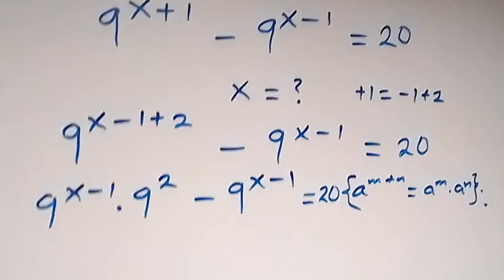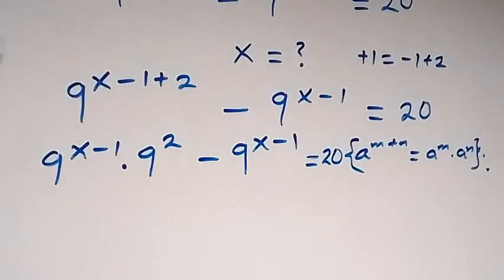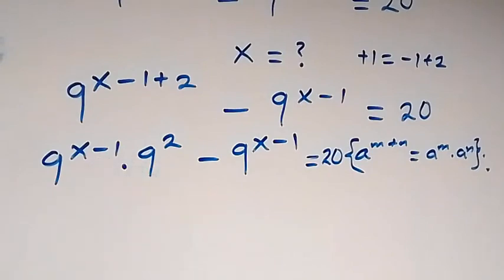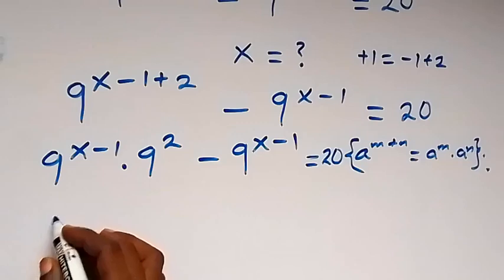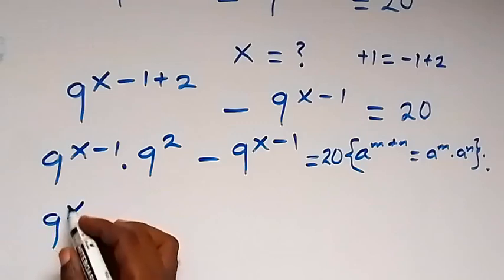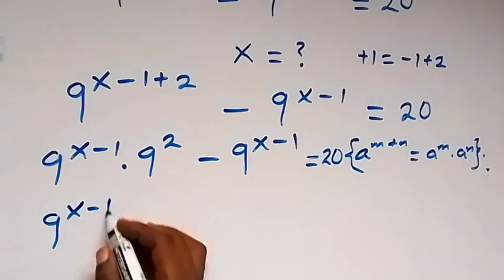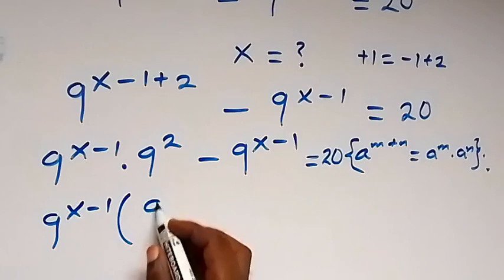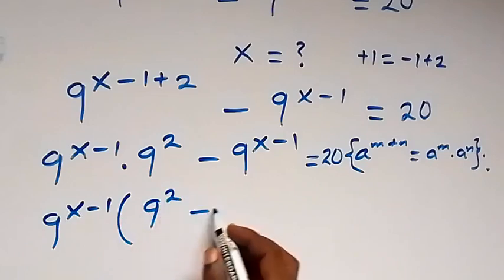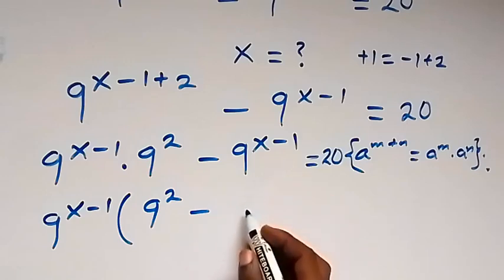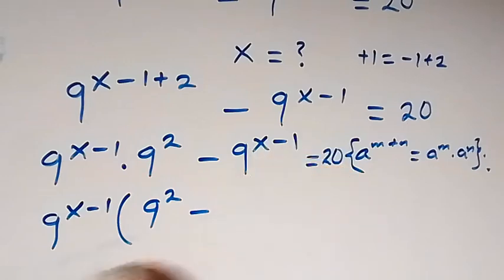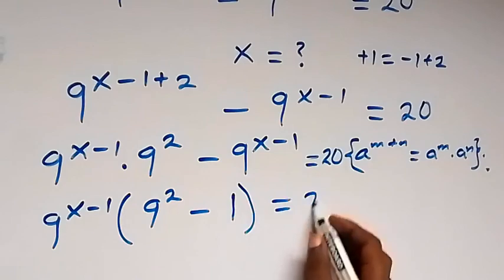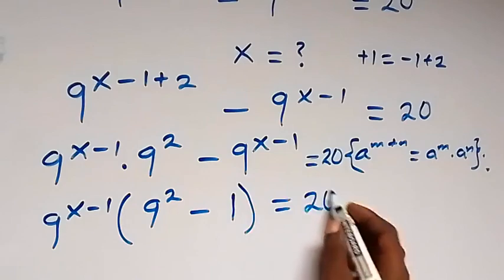Then next, we have 9 raised to the power x minus 1 common. Let's factor that out. So we have 9 raised to the power x minus 1, into bracket: 9 raised to the power 2, then minus 1, which is equal to 20.